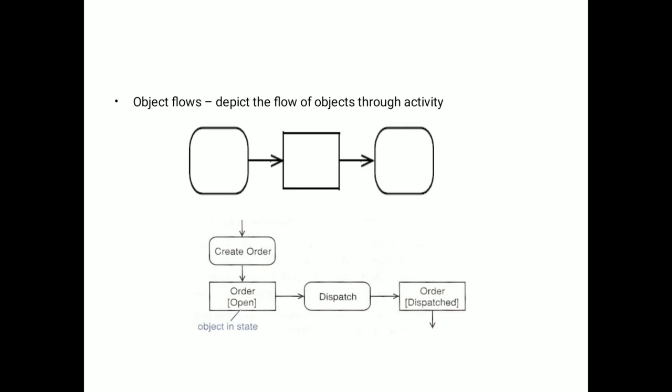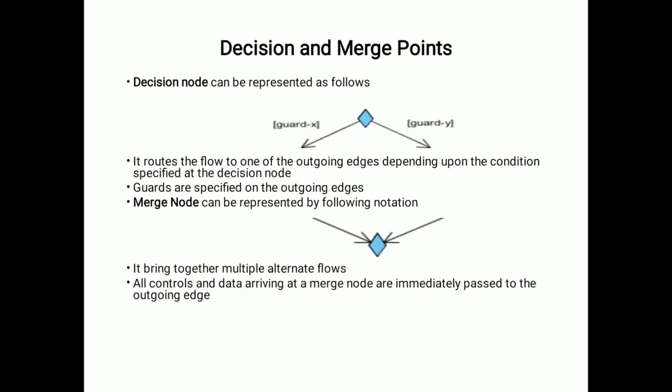Next is decision and merge points. Decision node can be represented as follows. Here is the diamond where true or false, yes or no, present, absent—likewise, a decision has to be taken. Then this particular decision node is used. Guard X and guard Y, these are the two decisions made here. It routes the flow to one of the outgoing edges depending upon the conditions specified at the decision node. Guards are specified on the outgoing edges.